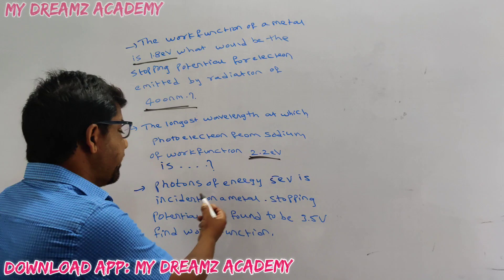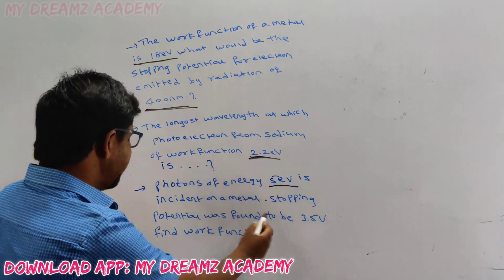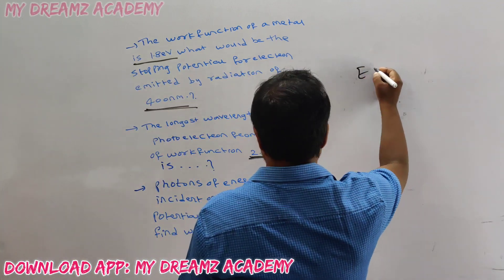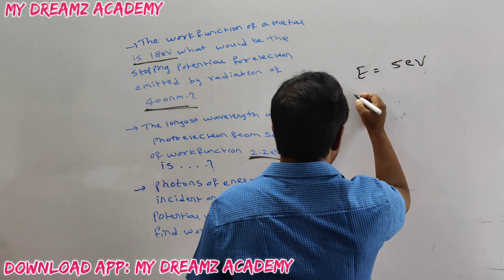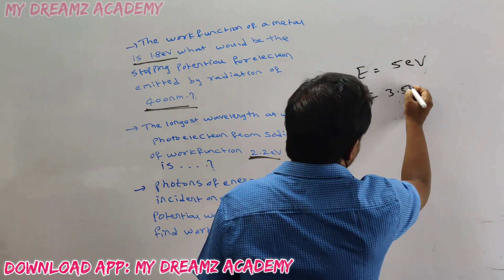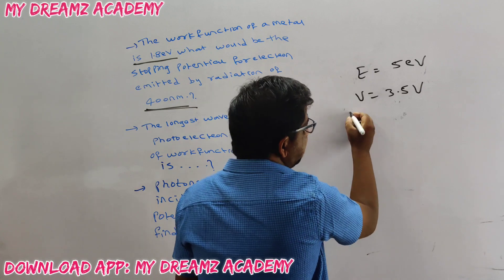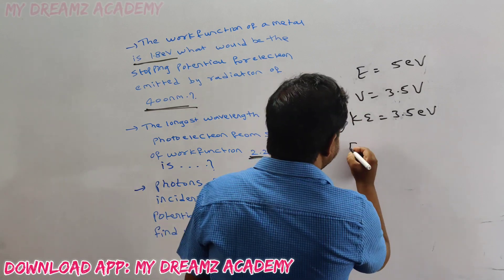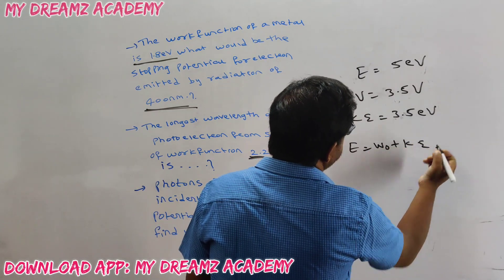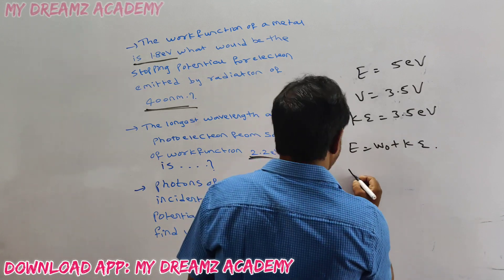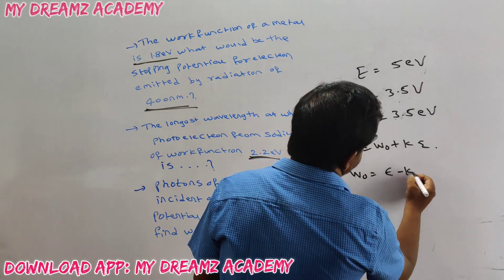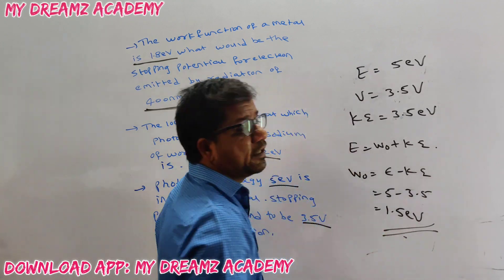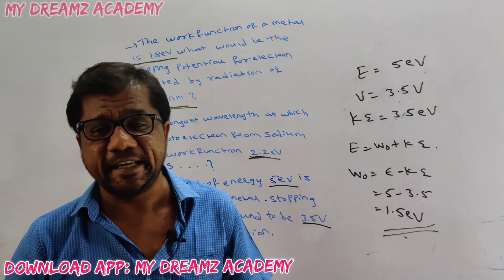Third question: Photons of energy 5 electron volts are incident on a metal. The stopping potential is found to be 3.5 volts. Find the work function. Since stopping potential equals kinetic energy, KE = 3.5 eV. Using E = W-naught + KE: work function = E − KE = 5 − 3.5 = 1.5 electron volts.